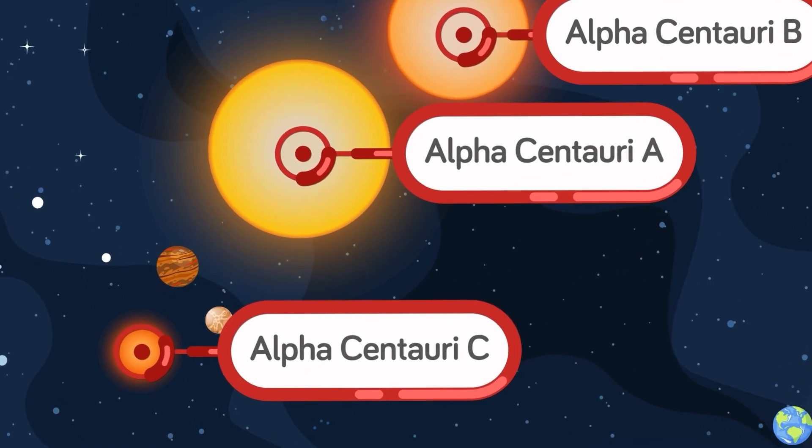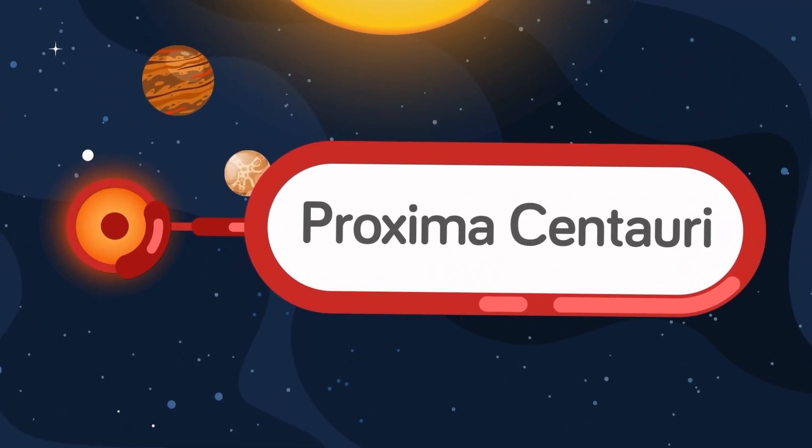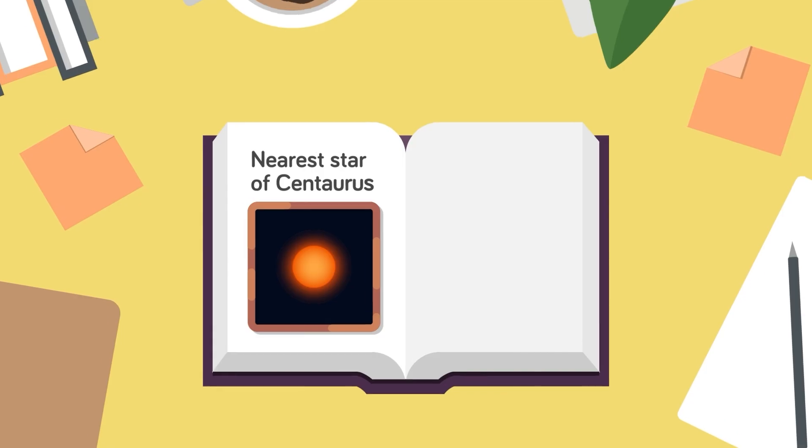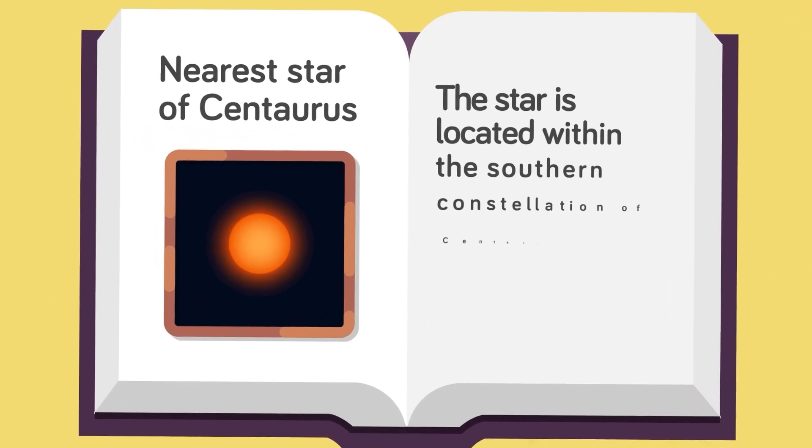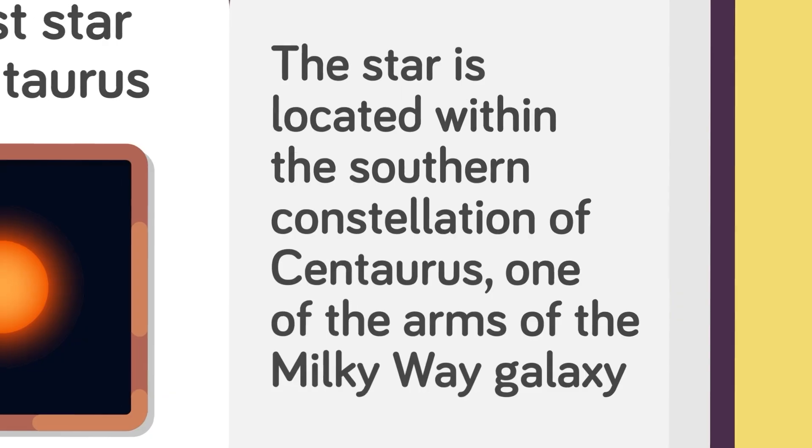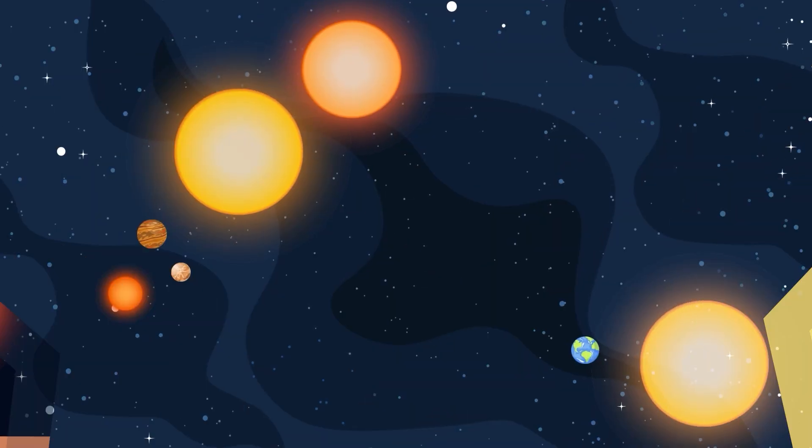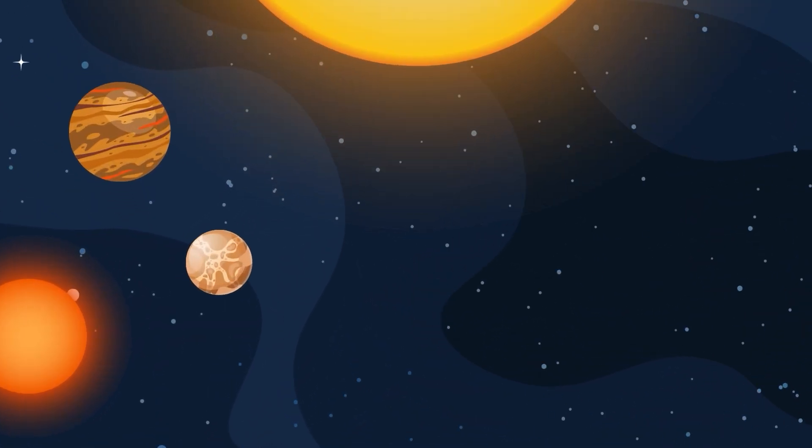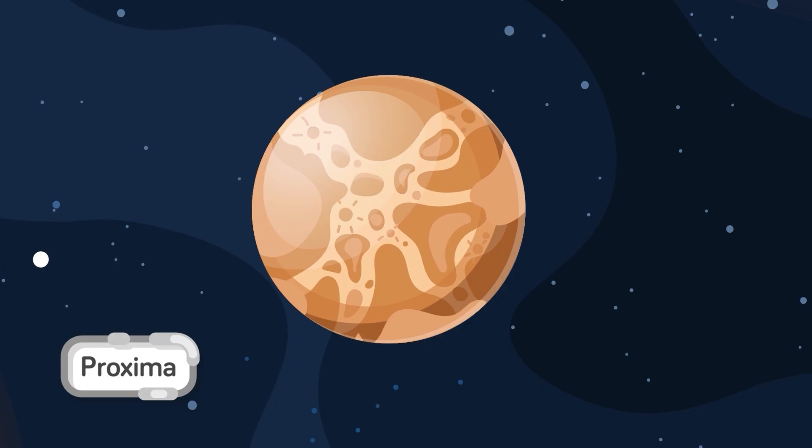The smaller red dwarf star is also more commonly known as Proxima Centauri. Its name literally means the nearest star of Centauri, since the star is located within the southern constellation of Centauri, one of the arms of the Milky Way galaxy. Two planets are known to exist in orbit of Proxima Centauri, with one of them being Proxima B.